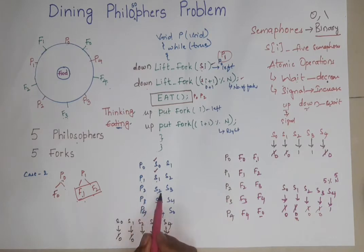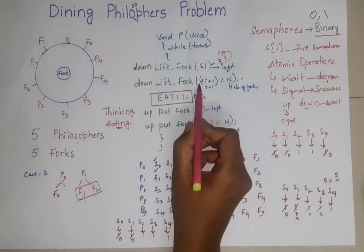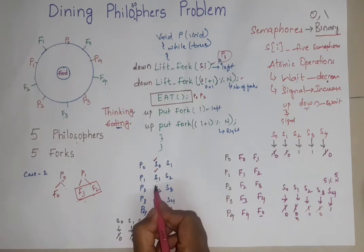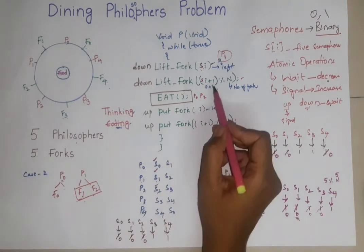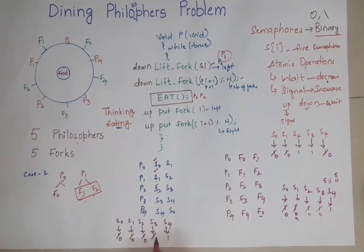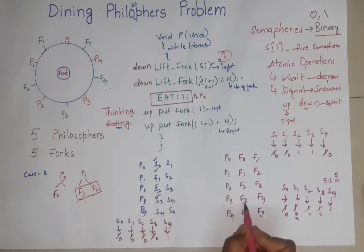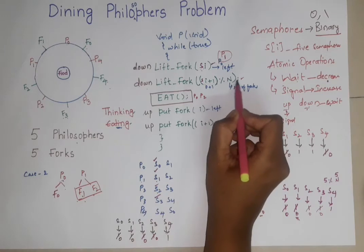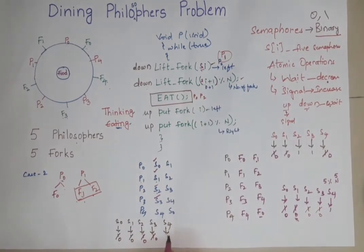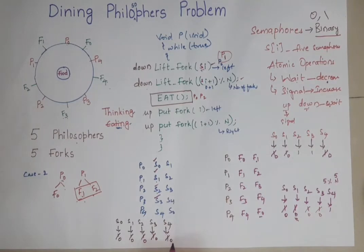In the same way, before P1 executes the second instruction, again P2 came. And P2 made it down, the value down and has taken the S2. And P2 is about to execute this instruction, again P3 came and P3 made it as down and taken S3 that is F3. When P3 is about to execute this second instruction, again P4 came and executed the first line of instruction and made it down, decreased the value to 0 and has taken S4.